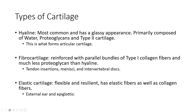So types of cartilage — we've got three general types. We're going to primarily talk about hyaline cartilage because it's the most common and probably the most relevant for PTs. It's got a glassy appearance, is primarily composed of water and proteoglycan, and is type 2 collagen. Then there's fibrocartilage, which is reinforced with parallel bundles of type 1 collagen fiber, so it's a little bit stiffer.